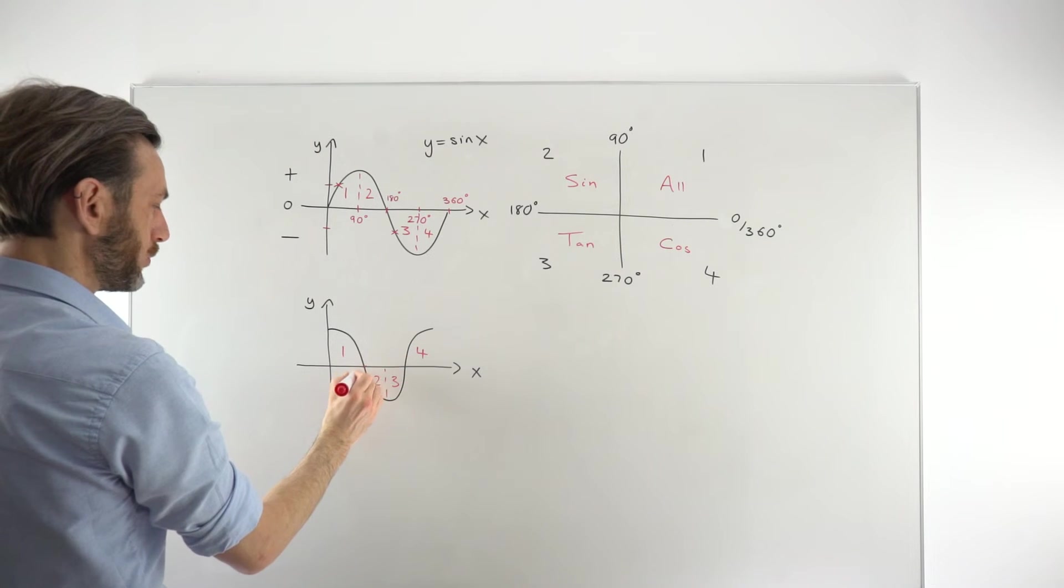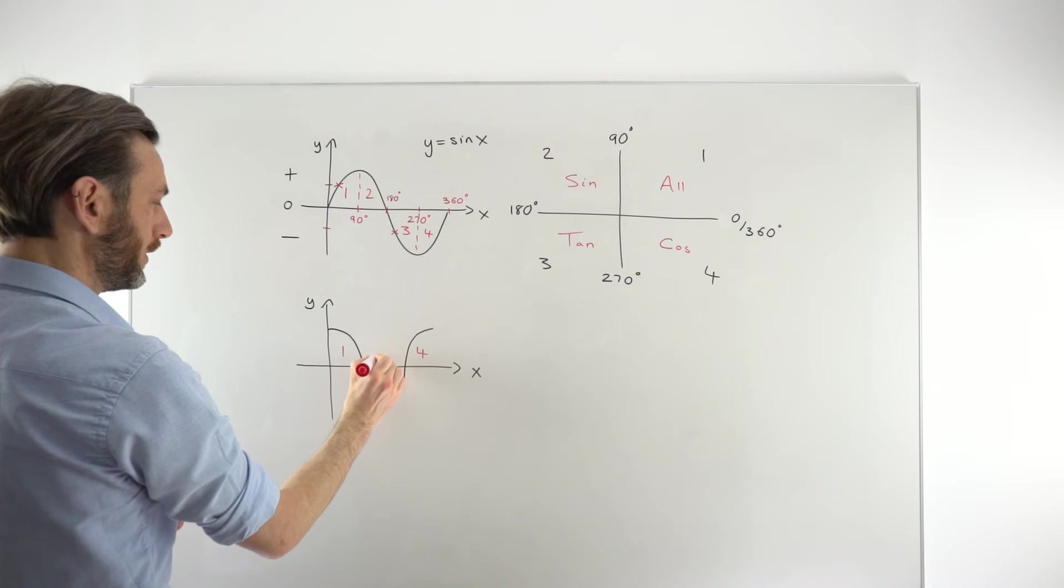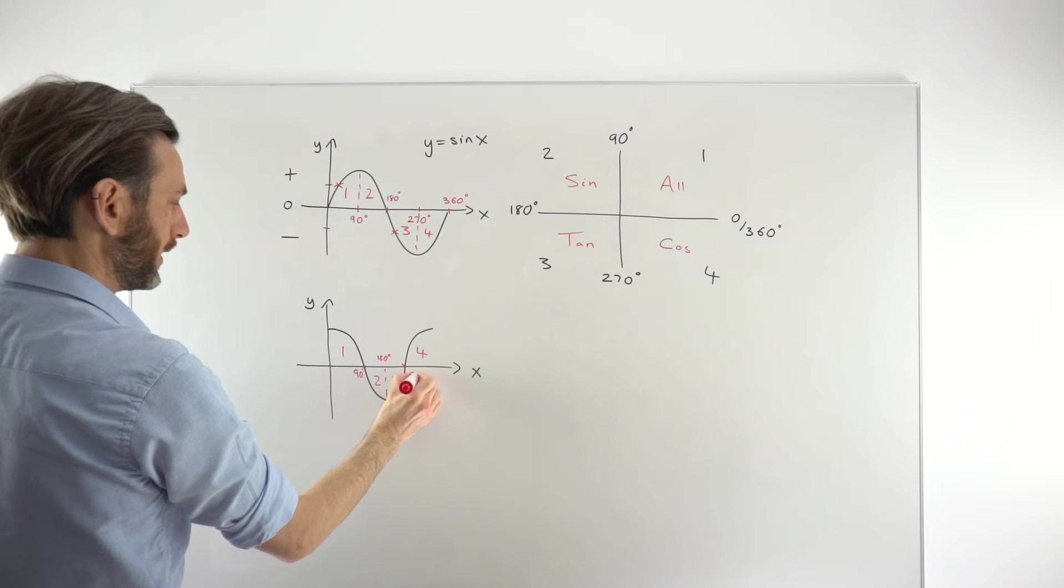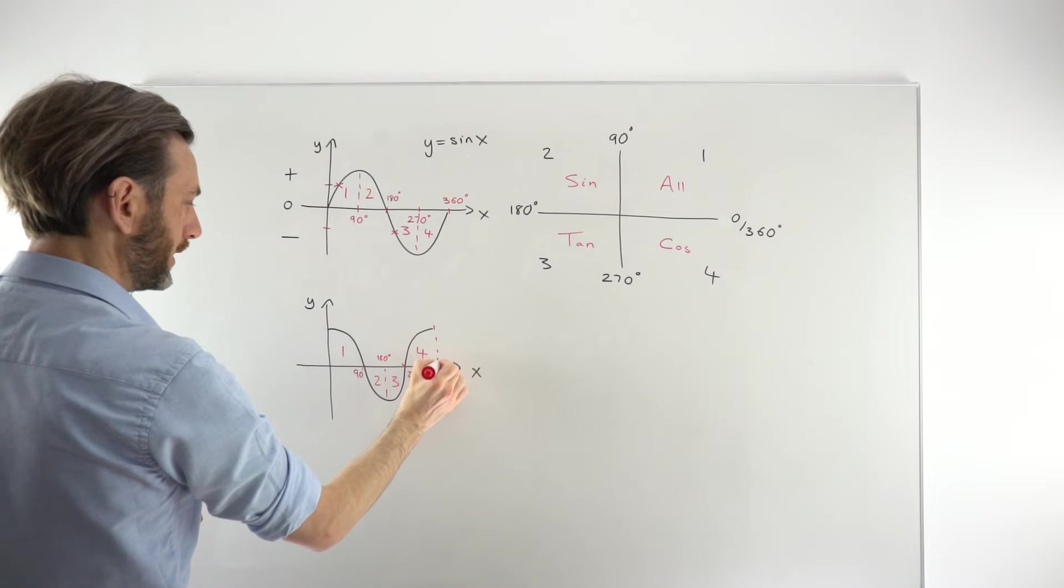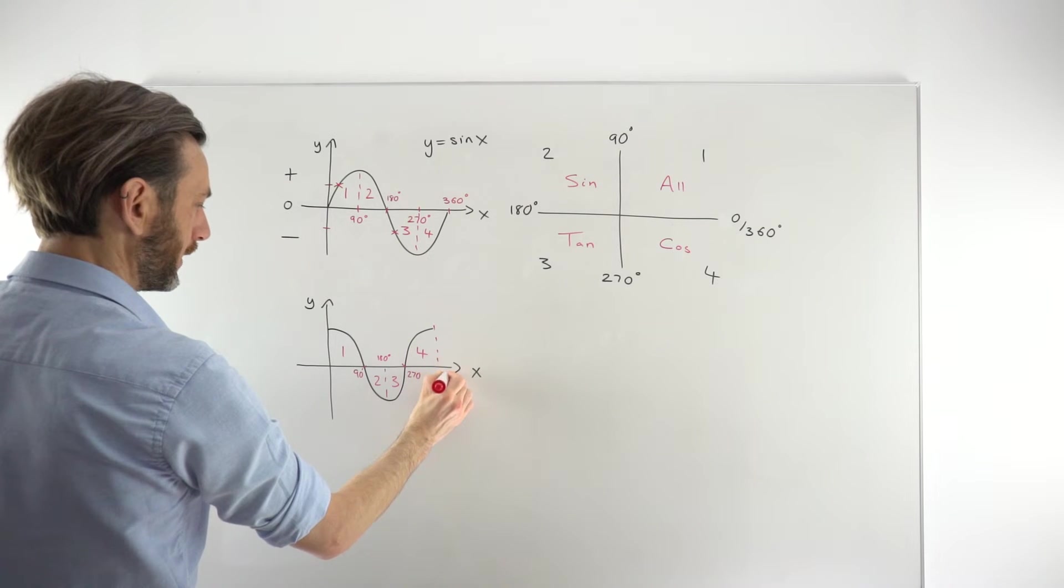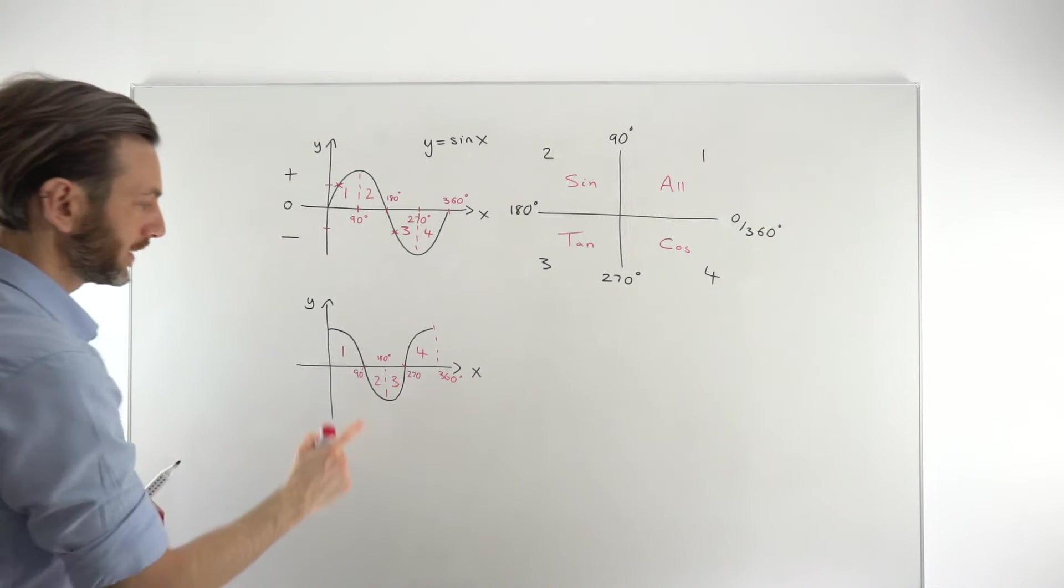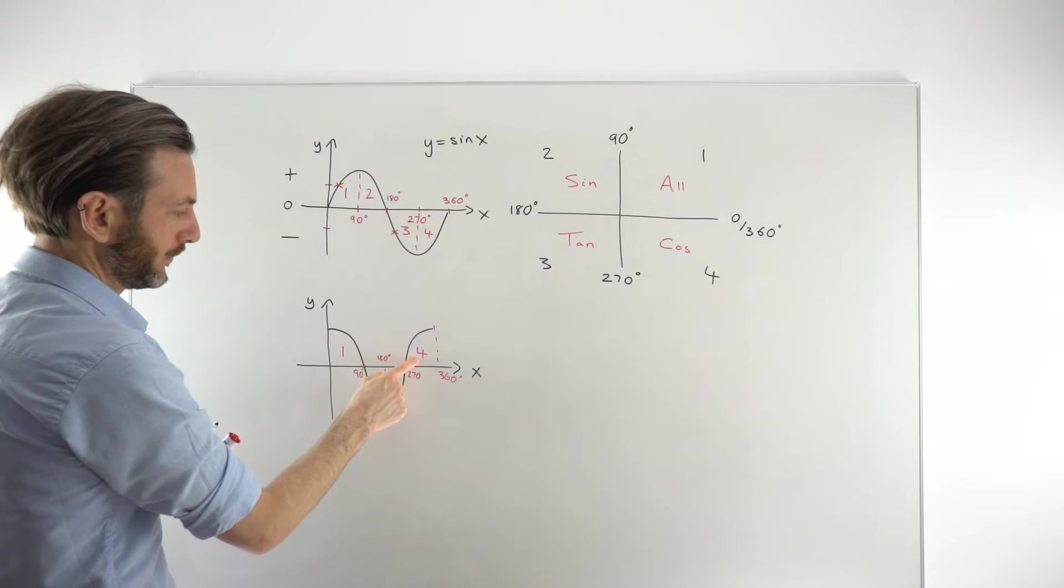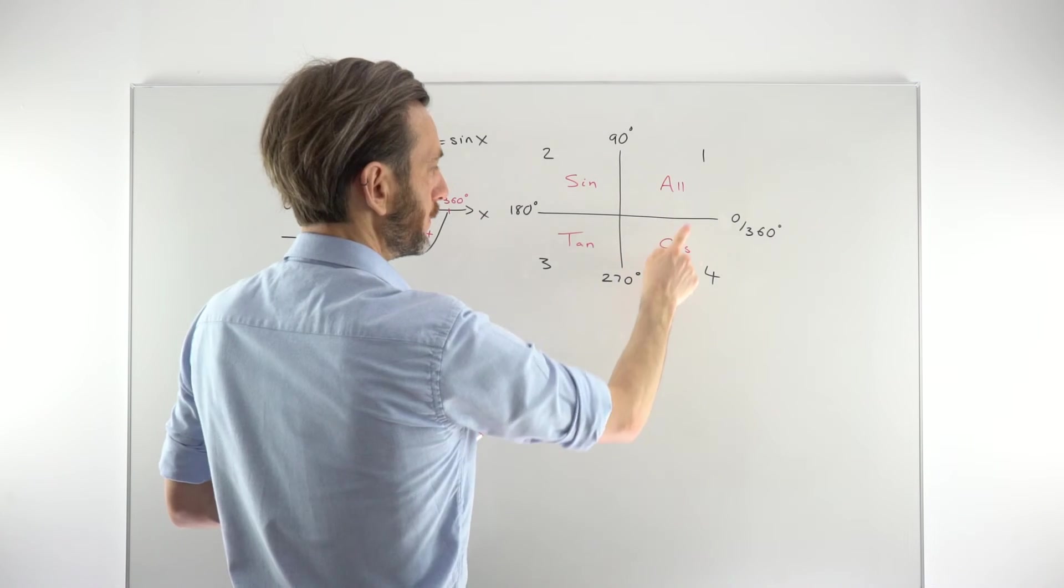And we've got the same usual key point. So that's 90 degrees. That's 180 degrees there in the middle. This point is at 270. And then this end point here is at 360 degrees. So we can see that the cosine graph should be positive in quadrants 1 and 4. So 1 and 4, which it is.